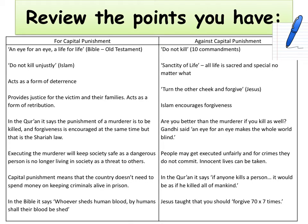In Islam, the Quran says do not kill unjustly. A justifiable reason for killing could be seen as taking the life of a murderer, as they've taken the life of somebody else. Capital punishment could also be seen to act as a form of deterrence — if people are afraid of being killed because of the crimes they've committed, they are much less likely to commit those crimes in the first place.